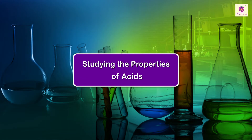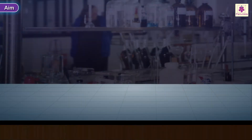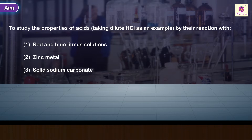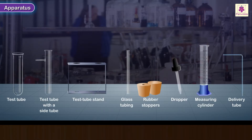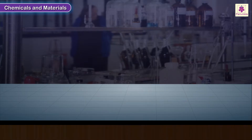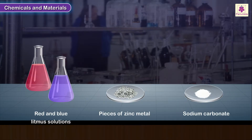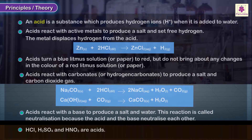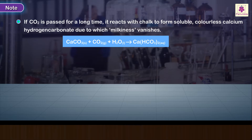Studying the properties of acids. Aim: to study the properties of acids, taking dilute hydrochloric acid as an example, by their reaction with red and blue litmus solutions, zinc metal, and solid sodium carbonate. Apparatus, chemicals, and materials are listed. Principles or theory noted. Precautions to be observed.